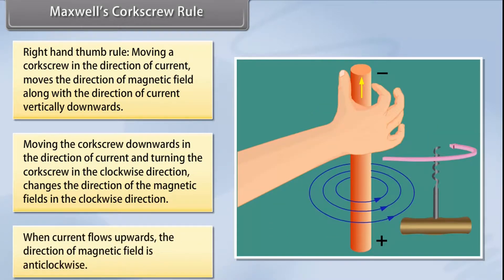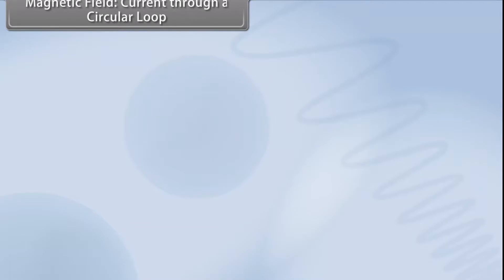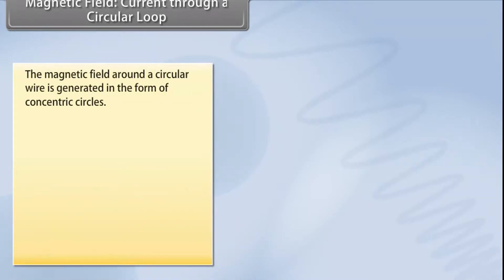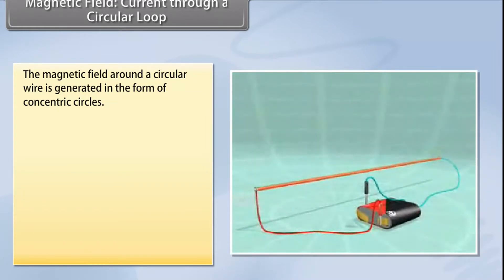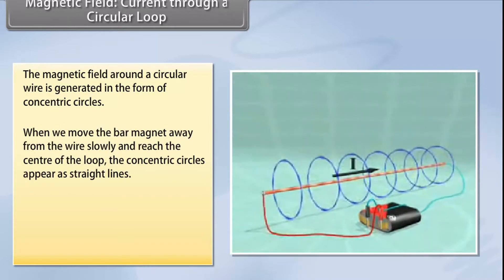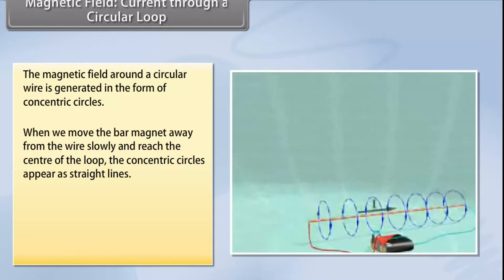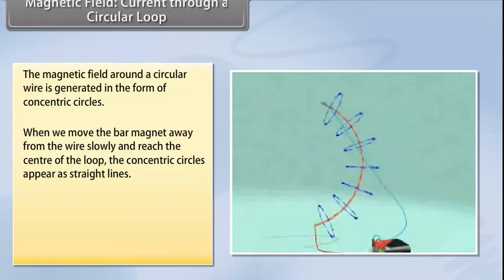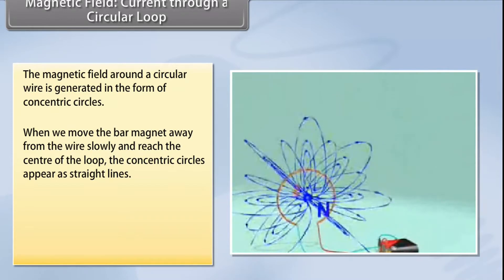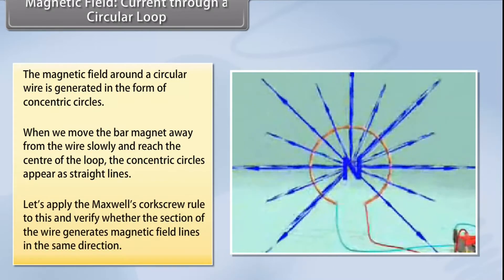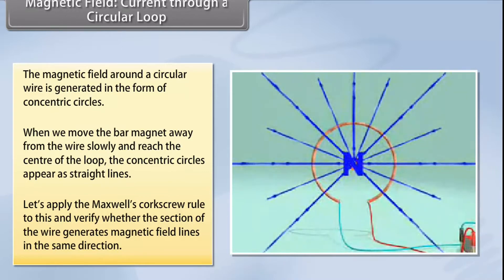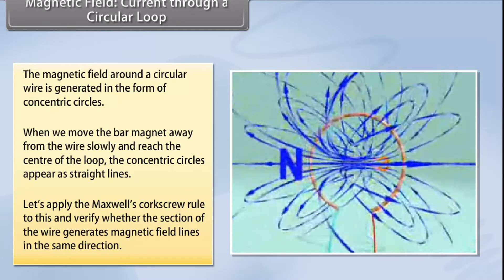When current flows upwards, the direction of the magnetic field changes and is anti-clockwise. When the wire through which we pass the current is placed in a circular manner, the magnetic field around it is generated in the form of concentric circles. By the time we reach the center of the loop, the concentric circles appear as straight lines. Try applying Maxwell's Corkscrew Rule to check whether every section of the wire generates magnetic field lines in the same direction.